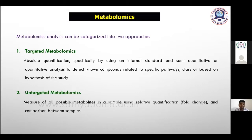Targeted metabolomics means it is absolute quantification — we have to target a particular metabolite for our analysis. For this analysis we need an internal standard for comparison and quantitative purpose. We can also detect unknown compounds related to a specific pathway. In untargeted metabolomics, we can measure all possible metabolites available in the sample.